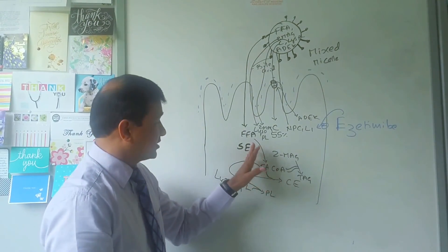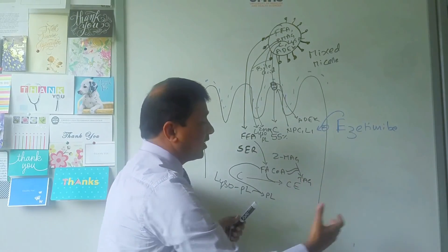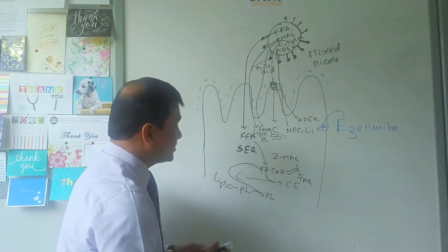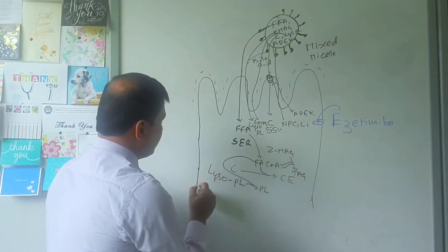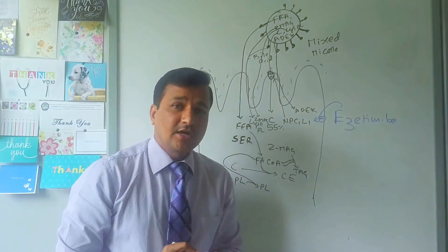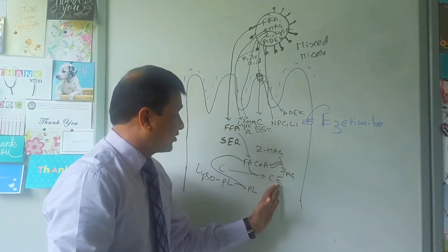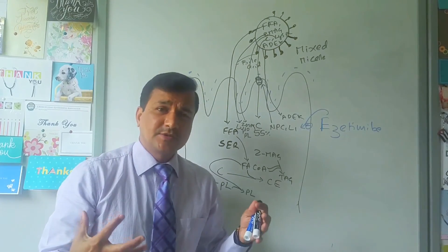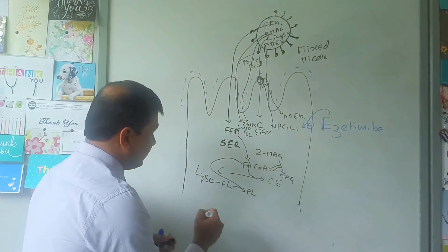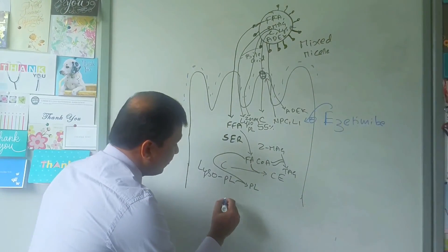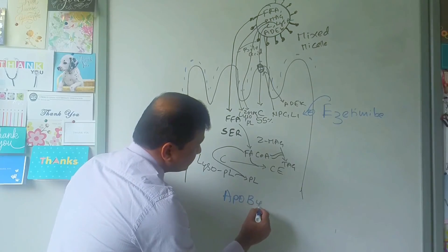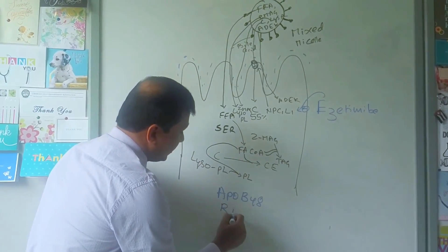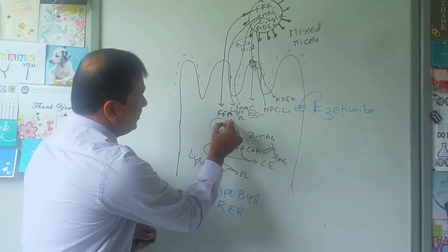Once re-esterification is done in the smooth ER, these lipids need to be sent out of the enterocyte into systemic circulation. They need to be loaded onto proteins because triglycerides, cholesterol esters, phospholipids, and vitamins A, D, E, K are not soluble in water. For this we need a protein called apolipoprotein B48.